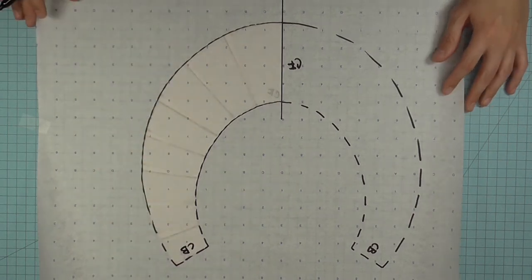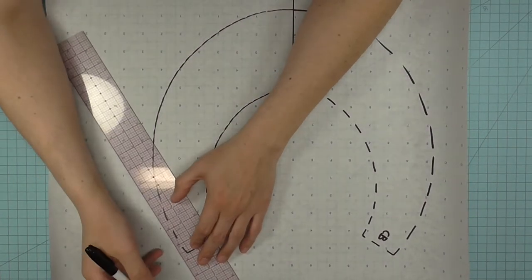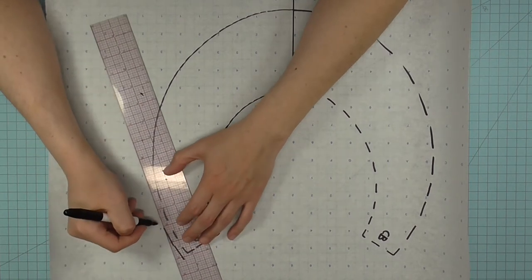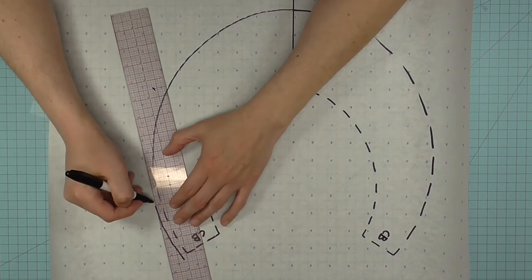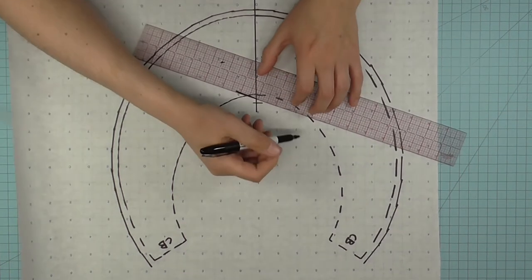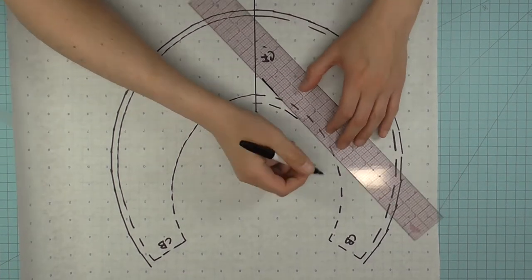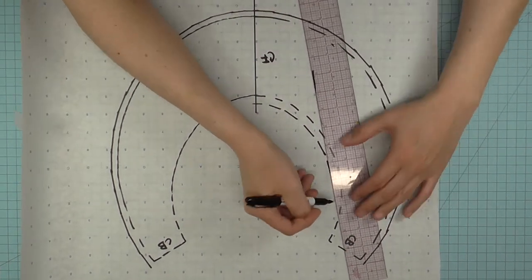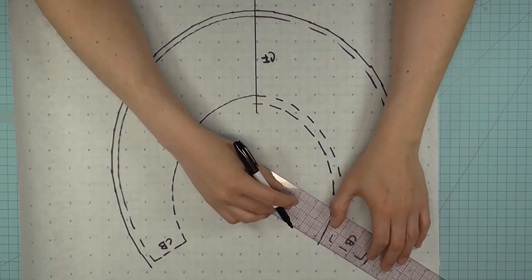Don't forget to label the other center back. Now add seam allowance to the outer edge of the brim. In this case, I'm using a quarter inch. The head size line for this brim pattern is going to get the same seam allowance as the crown. In this case, 3 eighths of an inch. I'm also going to add 3 eighths of an inch to center back on both center back edges.